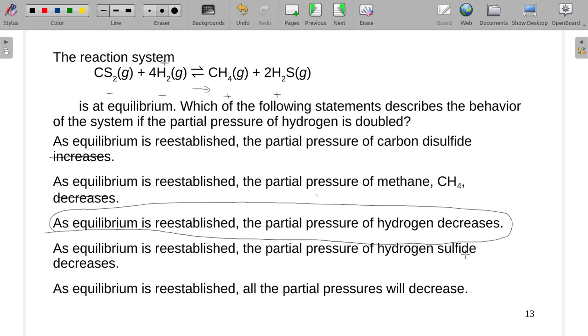So, hydrogen sulfide decreases. Hydrogen sulfide should increase. And equilibrium, all partial pressures will decrease. No, that doesn't really happen. One side must go up. The other side must go down if there is a disturbance to the equilibrium.